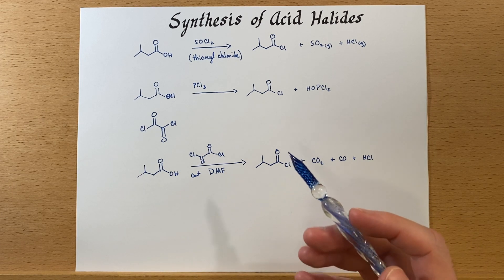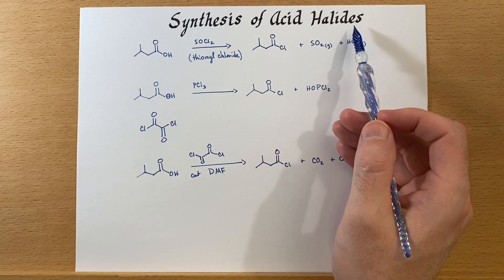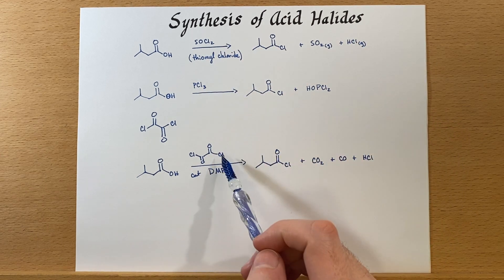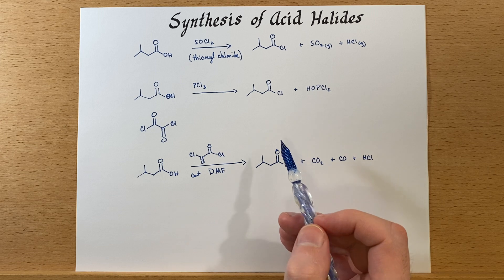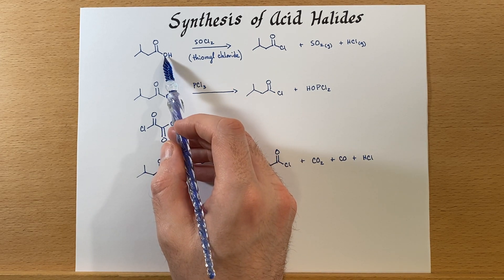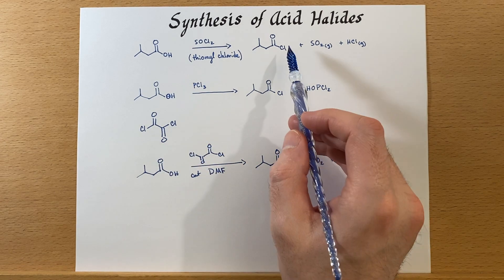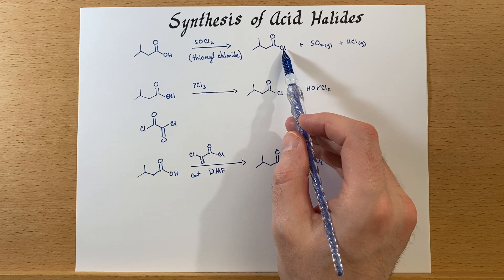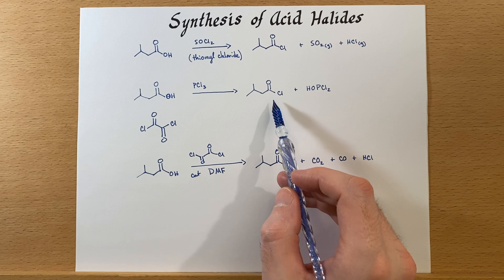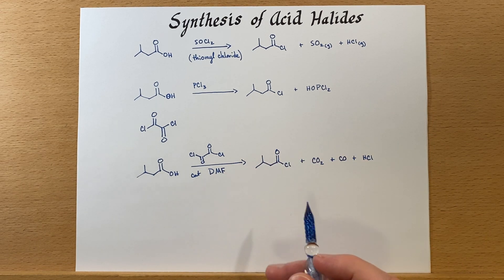So that's a discussion on how to synthesize acid halides. Of course, if you wanted to make a different halide, you'd substitute the appropriate reagent. What this allows us to do is convert something much less reactive — the carboxylic acid — into a functional group that is way more reactive, and then we can use that reactivity in further transformations.